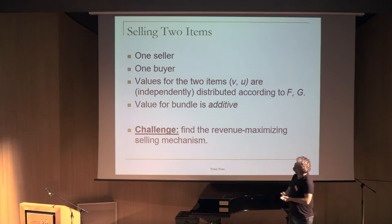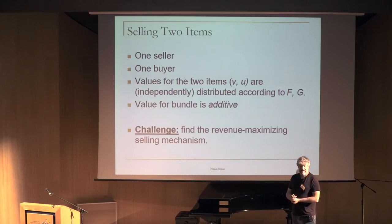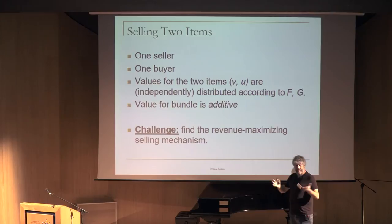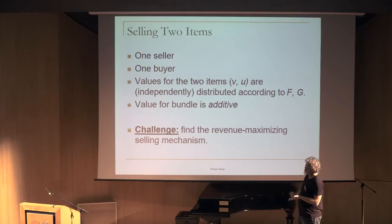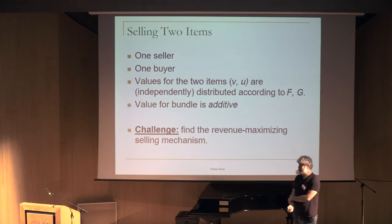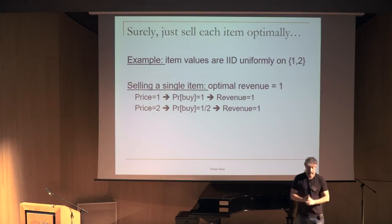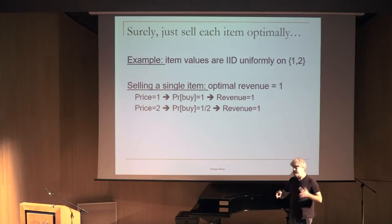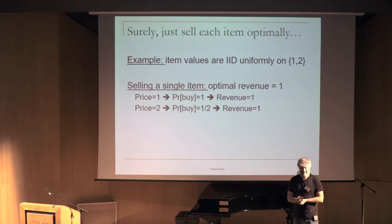Now comes the question: suppose you're selling two items. There's still one seller and one buyer, with two items having values v and u, independent of each other. The value for both is v plus u. How can the seller sell the two items optimally in terms of revenue? The obvious answer would be: sell the first item optimally, sell the second item optimally.